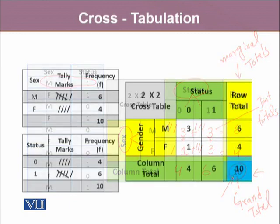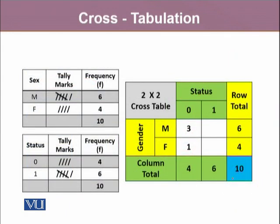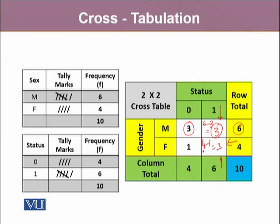Let's move further. If we are given this frequency table and already know some joint totals at certain rows and columns, we can find missing observations. For example, this should be 6 minus 3, which equals 3. Similarly, you can calculate missing cell values either from the column side or the row side — it could be 4 minus 1 equals 3, or 6 minus 3 equals 3.